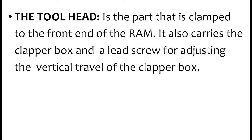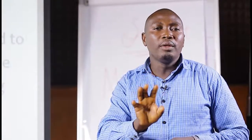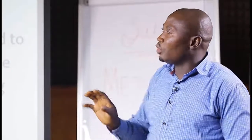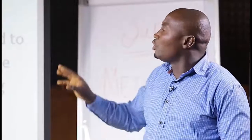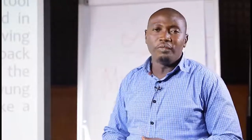The tool head is the part that is clamped to the front end of the ram. It also carries the clapper box and a lead screw for adjusting the vertical travel of the clapper box. This tool head is very important because it holds the clapper box and the cutting tool that carries out the shaping operation is also secured on it.